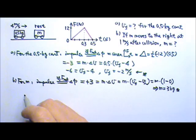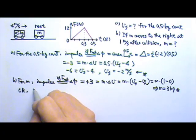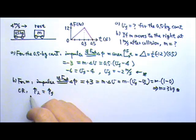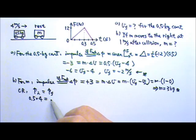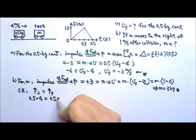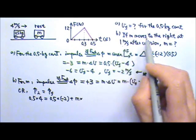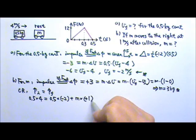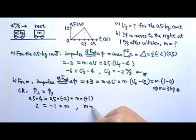Another way to solve Part B is using conservation of momentum. The initial momentum equals the final momentum. Initially, only the first cart has momentum: 0.5 kg times 4 m/s equals 2 kg·m/s. The second cart has no initial momentum. Afterwards, the first cart has velocity negative 2 m/s and the second cart has mass M at positive 1 m/s. So: 2 equals negative 1 plus M times 1, giving M equals 3 kg.